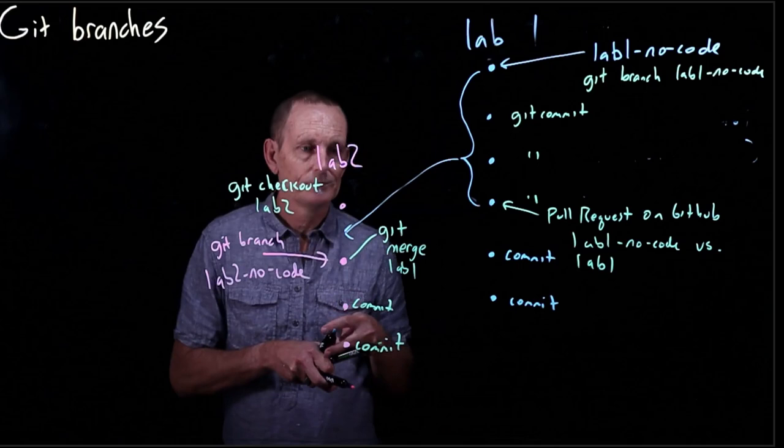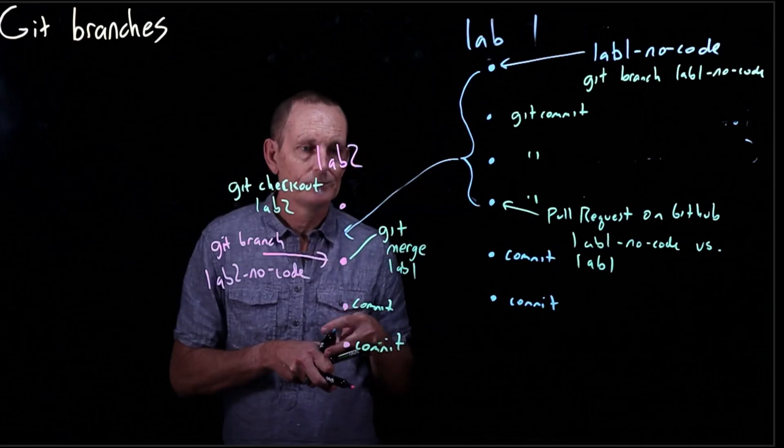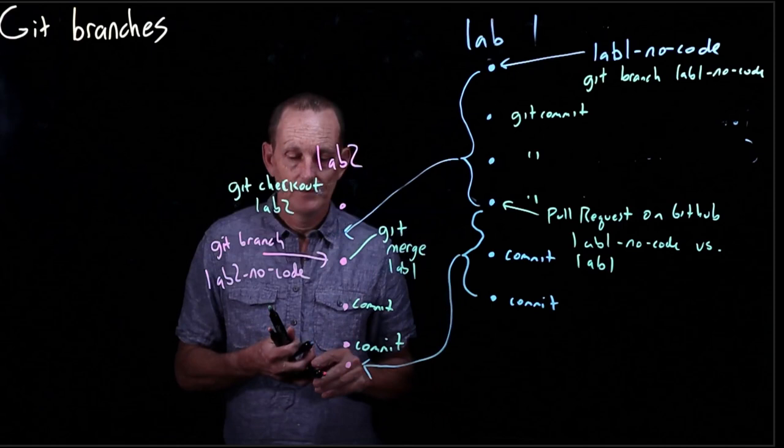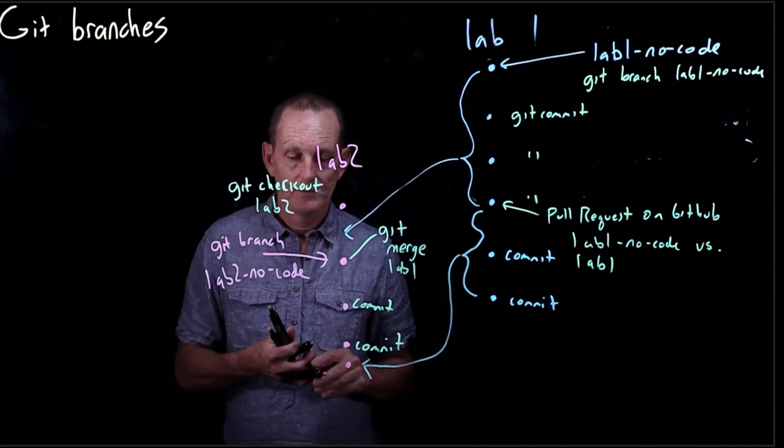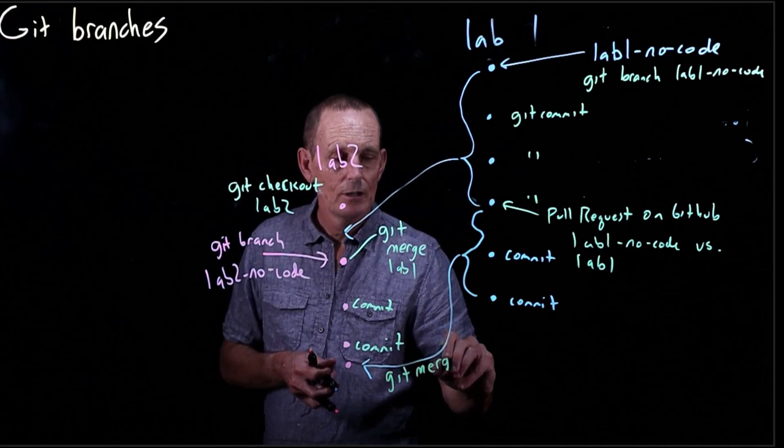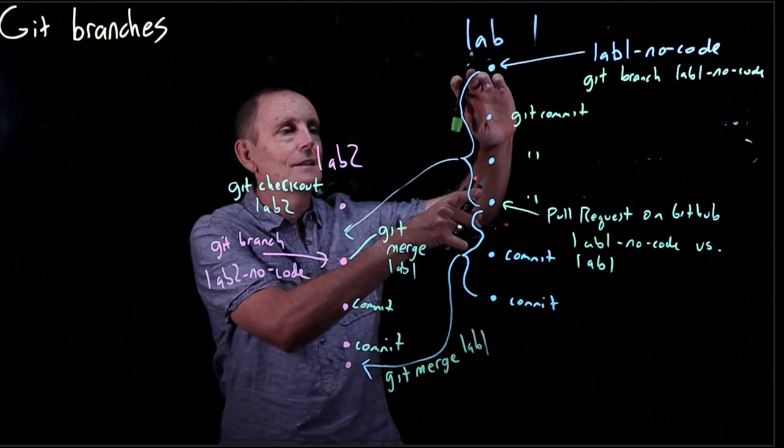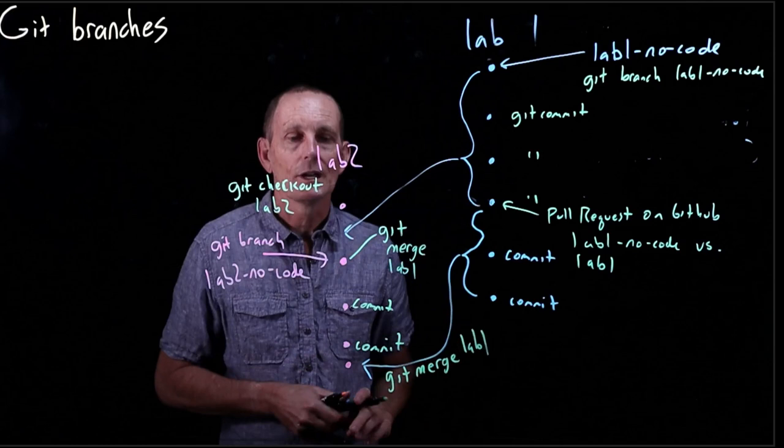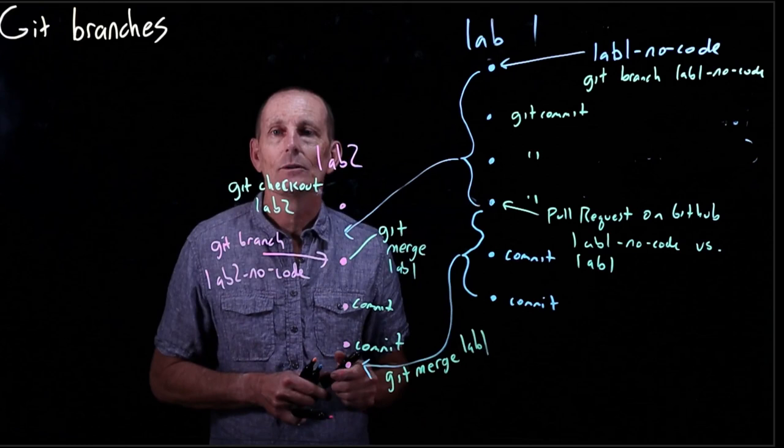So what we need to do is get those into lab two. And how do we do that? We just re-merge lab one. So we did an initial merge of lab one, and that gets us this part. And now that lab one has actually changed, another merge will get us the remaining changes. That's the process that we're going to be using.